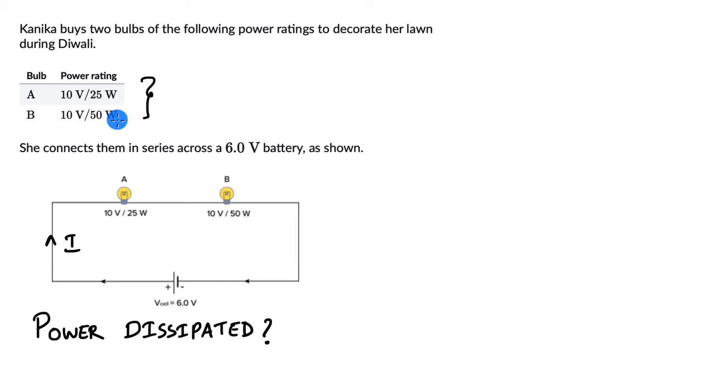From this data, we can try and figure out the resistance of these two bulbs. Because we know that power is V² by R. So we can figure out R. This is V² by P. We already know what P is individually for these bulbs. You also know V, like this is a 10-volt, 25-watt power rating of bulb A. This is 10-volt, 50-watt power rating of B. So we can figure out R_A and R_B.